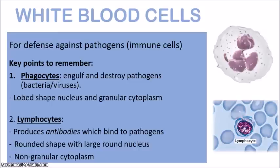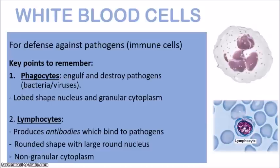You would notice about the phagocytes — as you can see in the first picture — that they are easily recognized by their lobe-shaped nucleus. The nucleus is not just a regular round nucleus; it is made up of lobes. The cytoplasm of the phagocytes is also usually granular, and this helps with the digestion of the pathogens. The digestive enzymes released from the granular cytoplasm help to digest and destroy the pathogens.